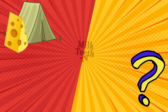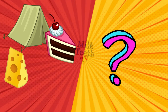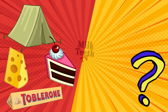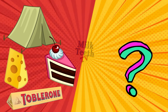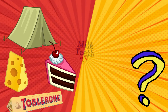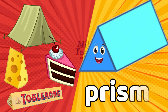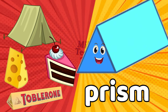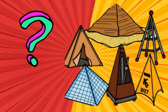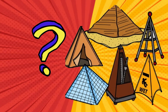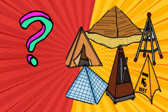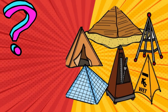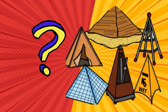A tent, a wedge of cheese, a slice of cake, and the chocolate box — look carefully, they all have the same shape. That's a prism! Now look carefully at these objects: the pyramids, the tent house, the glass pyramid, wet signs at malls and airports, and the electric tower — they all have the same shape.